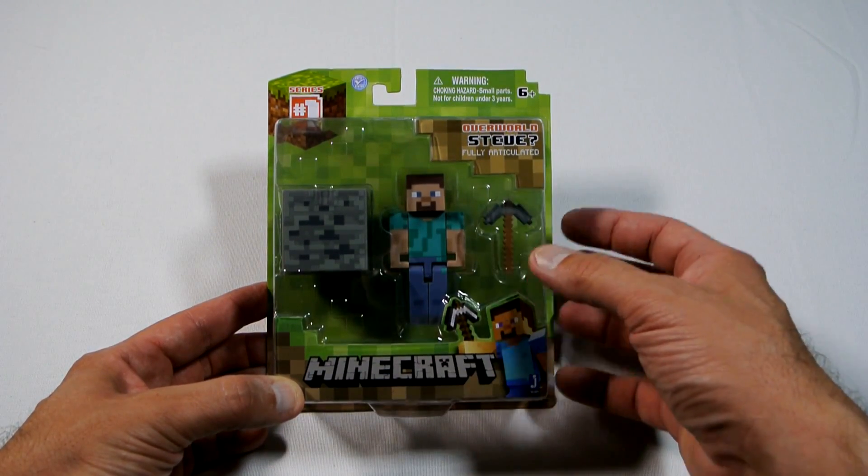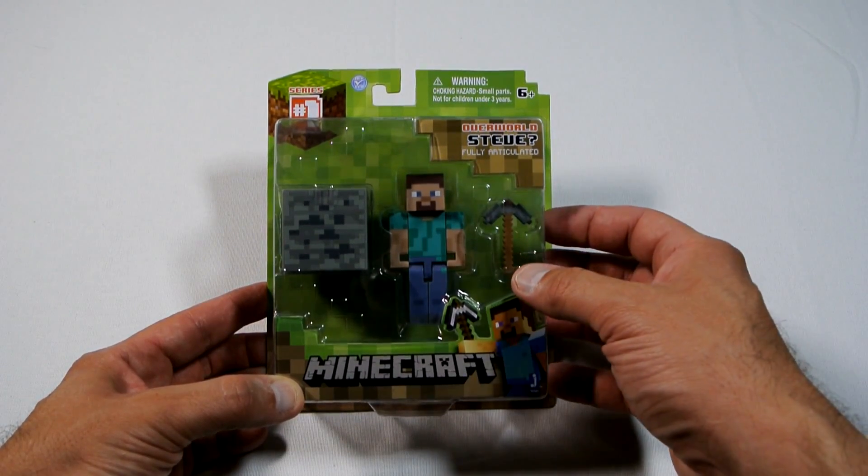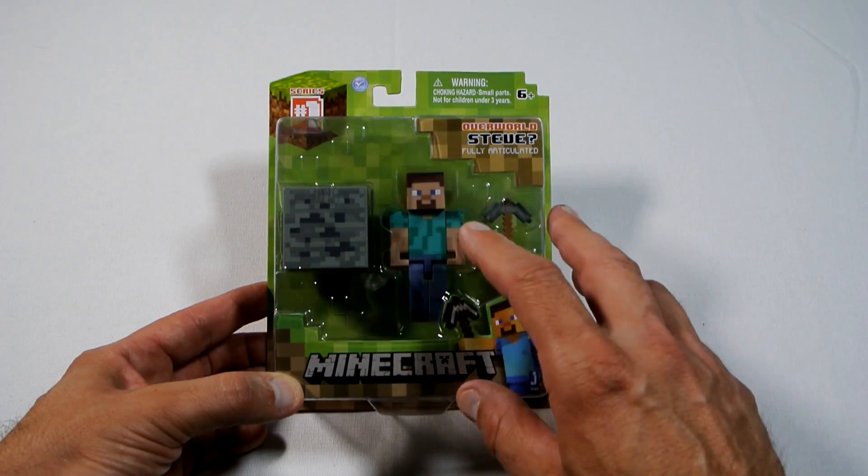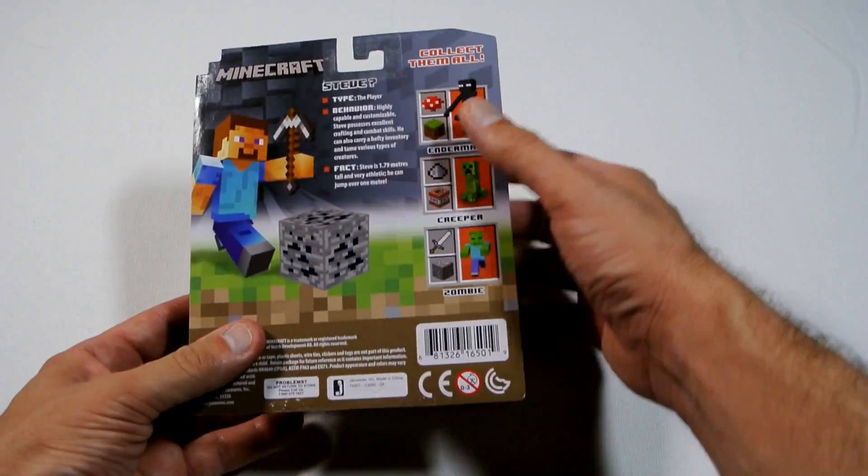but I thought the figure is quite neat and I like it, so I decided to do an unboxing for my channel. This character is Steve and there seems to be three other characters in series one. It's from Jazzwares.